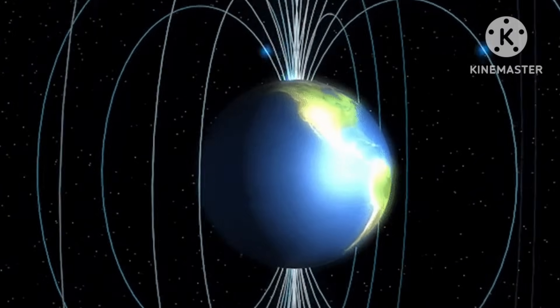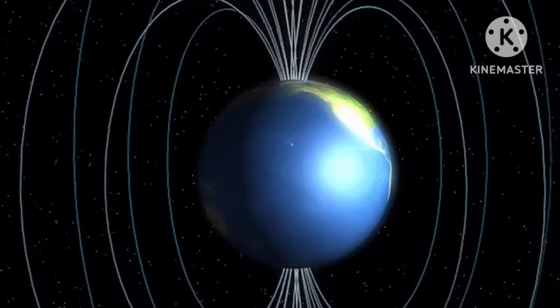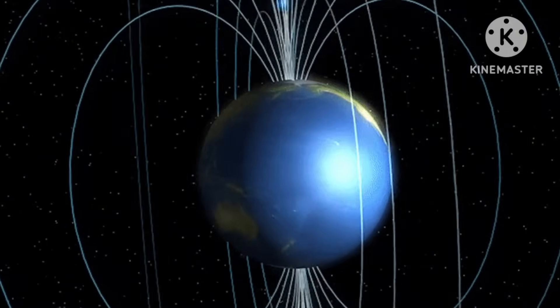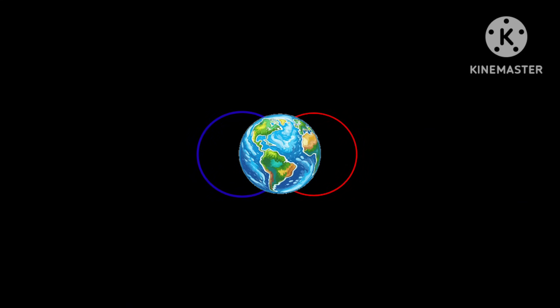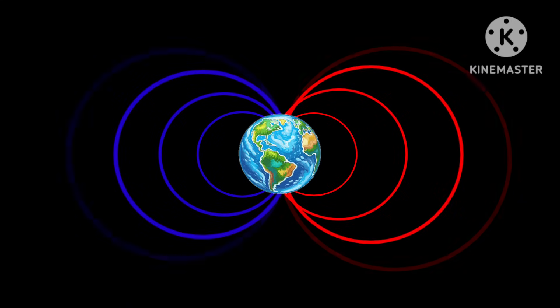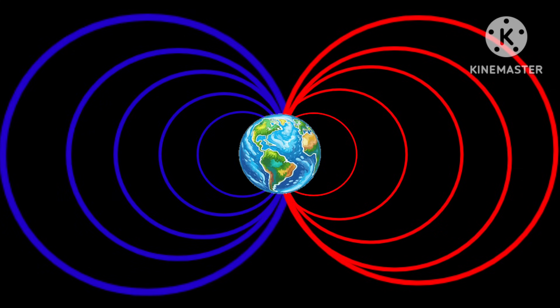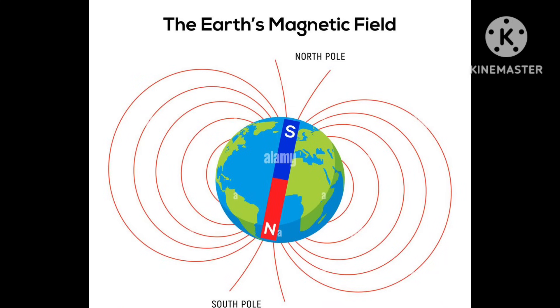Earth is surrounded by a magnetic field extending tens of thousands of kilometers in space. It consists of a north magnetic pole located near the earth's geographic south pole.